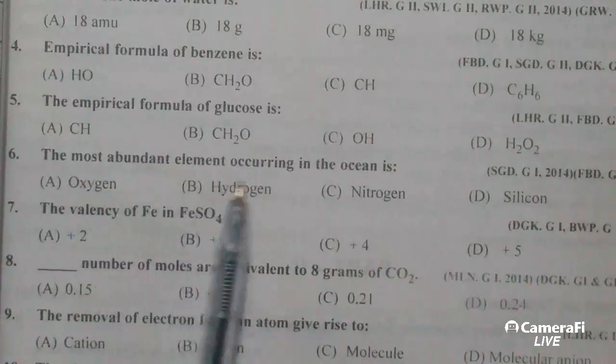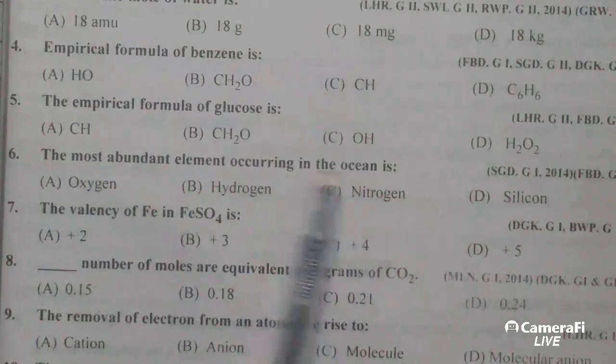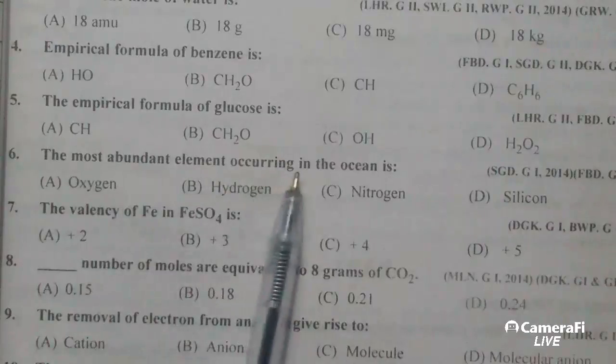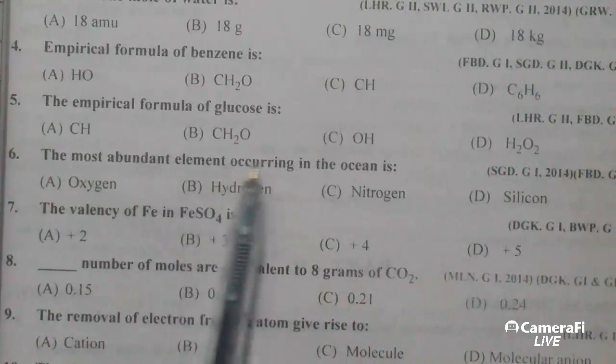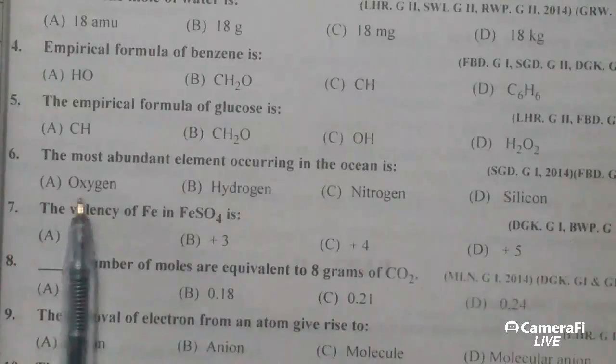The most abundant element occurring in the ocean is. سمندر میں پائے جانے والا سب سے زیادہ کثرت کے ساتھ پائے جانے والا element. Oxygen.